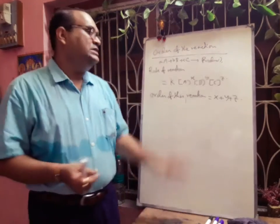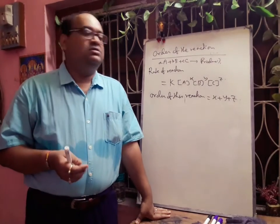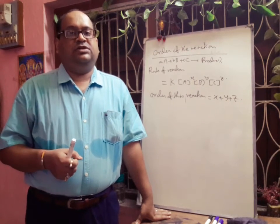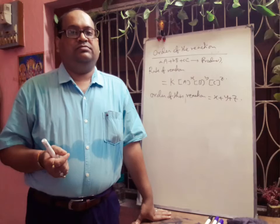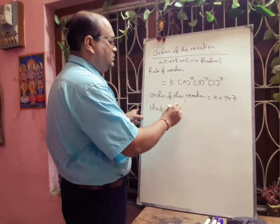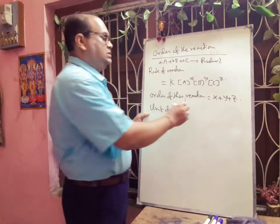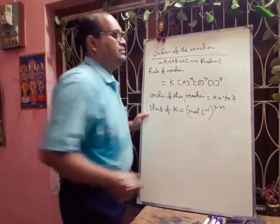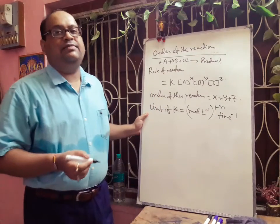The order of a reaction may be zero. There are some reactions where order may be zero. It may be a fraction or it may be a whole number. It is an experimental value determined from the rate equation. The unit of K equals mole per liter to the power (1 minus n) into time inverse, where N is the order of the reaction.